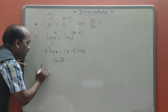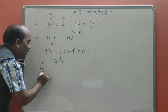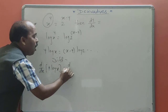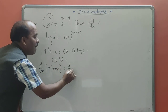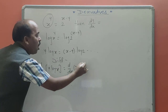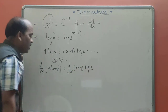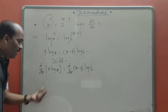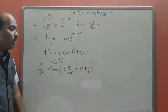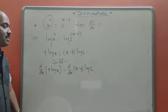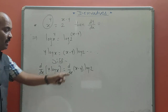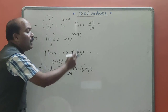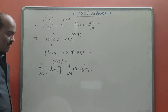Here, the derivative of y·log x equals the derivative of (x minus y)·log 2. On the LHS, functions are available in product form; on the RHS, functions are in subtraction. So here apply the u·v rule, and here apply the derivative of (u minus v) rule.